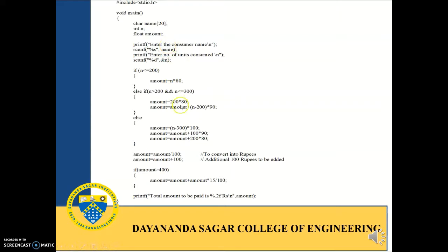Based on these conditions, the input is the consumer name and the number of units consumed. The first condition is if n is less than or equal to 200. For example, if n equals 90, then 90 is less than 200 is true. If it is true, then the amount will be equal to 90 into 80, and this amount will be printed as the output.